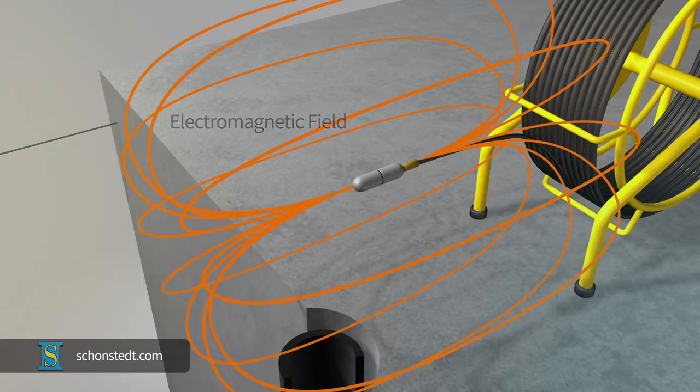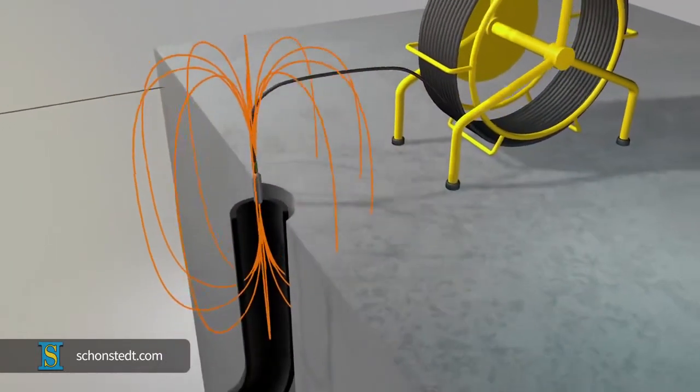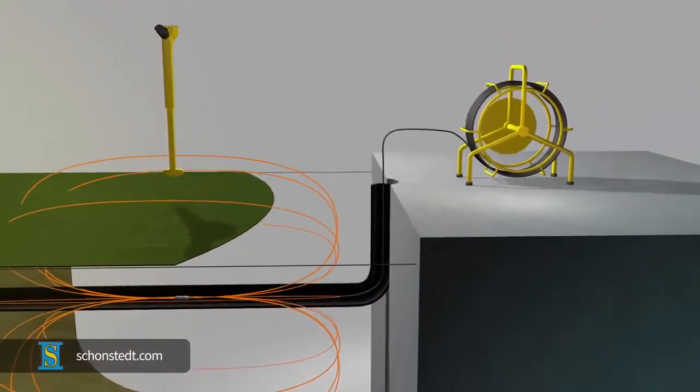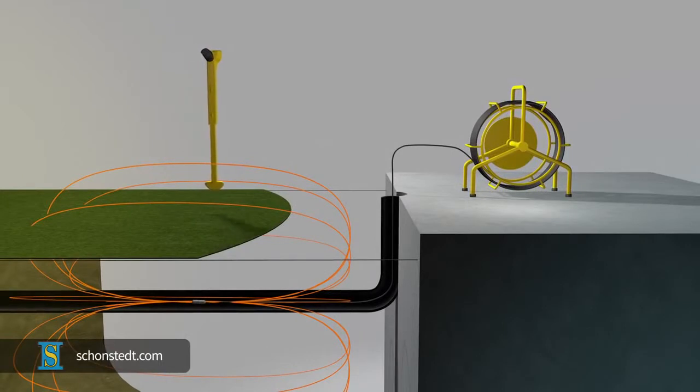The field expands in all directions and once the sonde is inserted inside a PVC pipe and pushed along, that field will move with the sonde and reach above the ground surface, allowing an operator to trace it with a receiver.